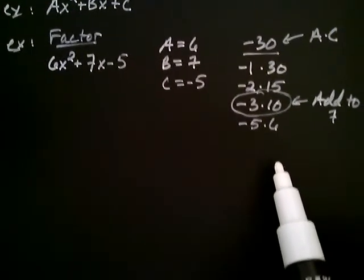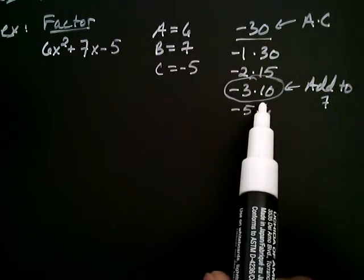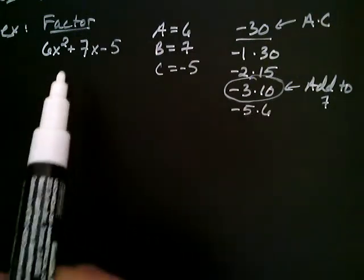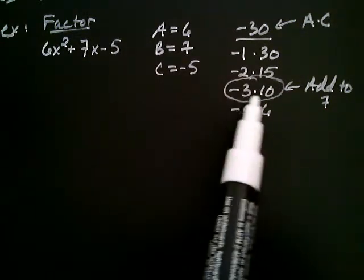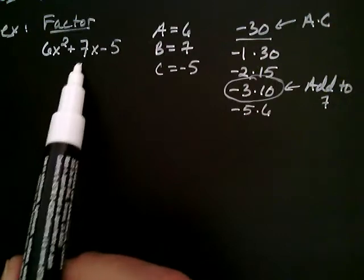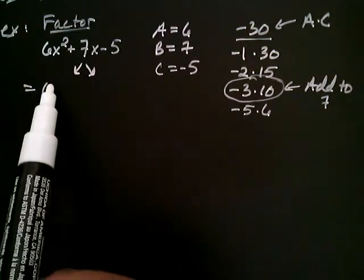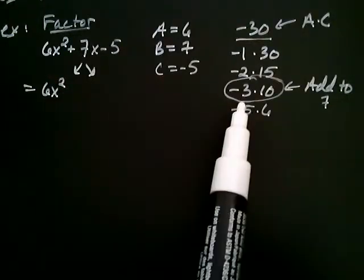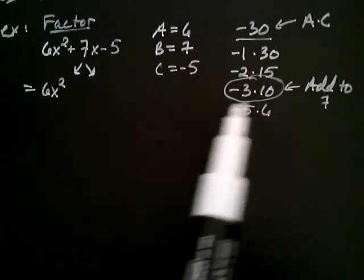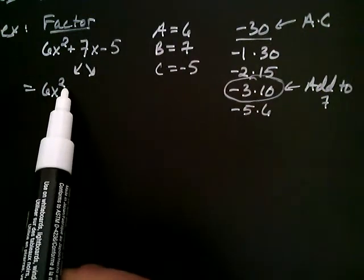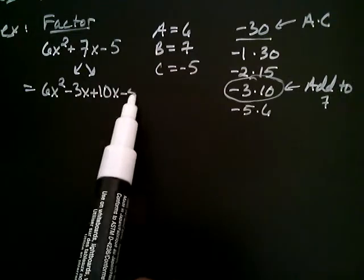And the reason that's significant is because if these numbers add to be positive 7, then surely I can write this 7 as negative 3 plus 10. That is, I can use this combination of numbers to split up that positive 7. So the 6x² remains the same. But, as we just said, negative 3 plus 10, that is positive 7. So I can write this 7x as -3x + 10x - 5.